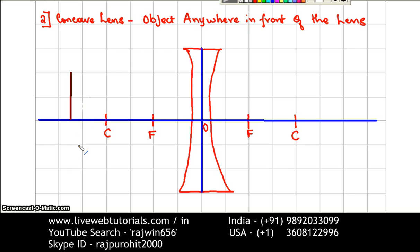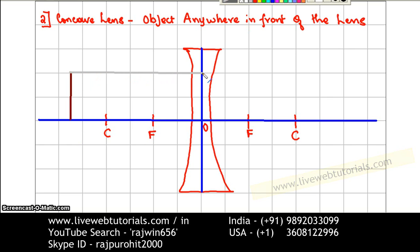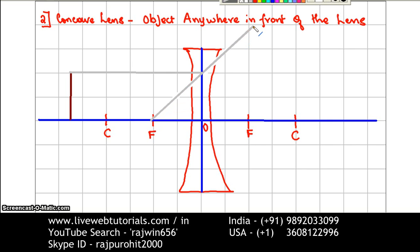Now I am going to draw the rays from this object. From this point, I am going to draw a ray that is parallel to the principal axis. Any ray parallel to the principal axis has to pass through f. Since this is a concave, diverging lens, f will be on the left side. So from here I am going to join through this point and draw this ray.